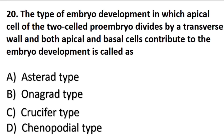The type of embryo development in which the apical cell of the two-celled pro-embryo divides by a transverse wall, and both apical and basal cells contribute to embryo development, is called the Chenopodial type.